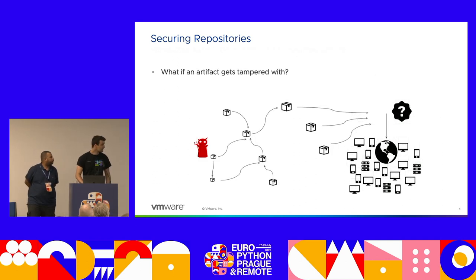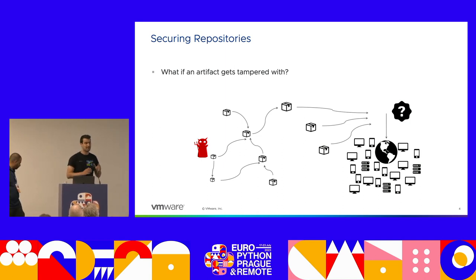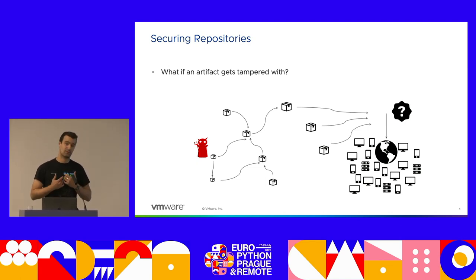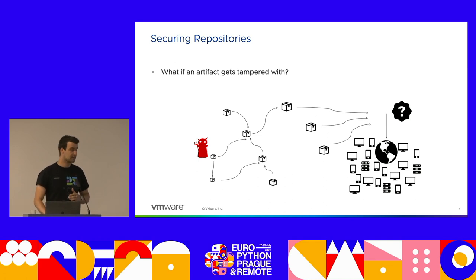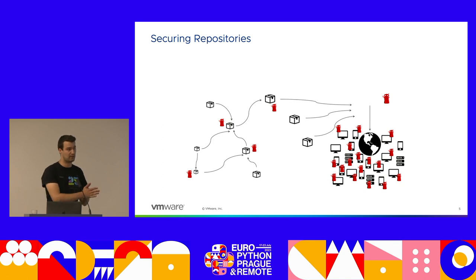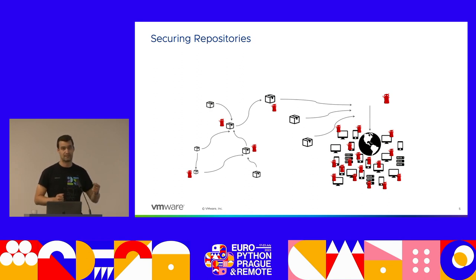We are protecting repositories because they're high-value targets. Repositories are something we all rely on for our daily jobs, and our users expect that we are going to build secure packages and products. The question we should ask ourselves is: what happens if an artifact is tampered — changed, modified somehow? The first level of vulnerable people are those who directly rely on our project. But what is even more scary is that it doesn't end there — the vulnerability can appear in transitive dependencies as well.